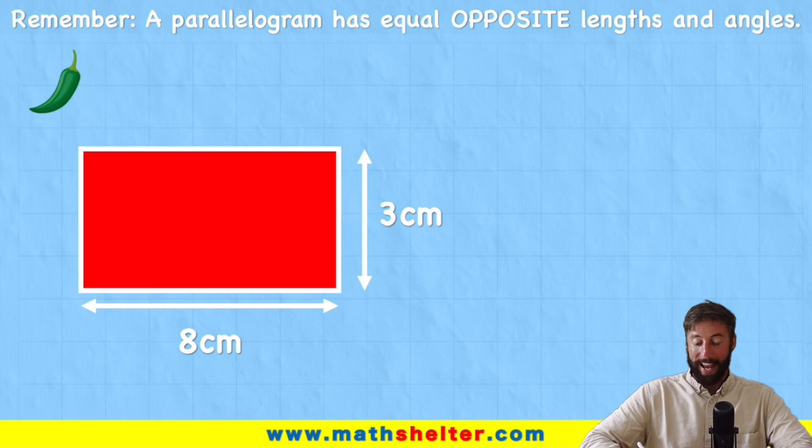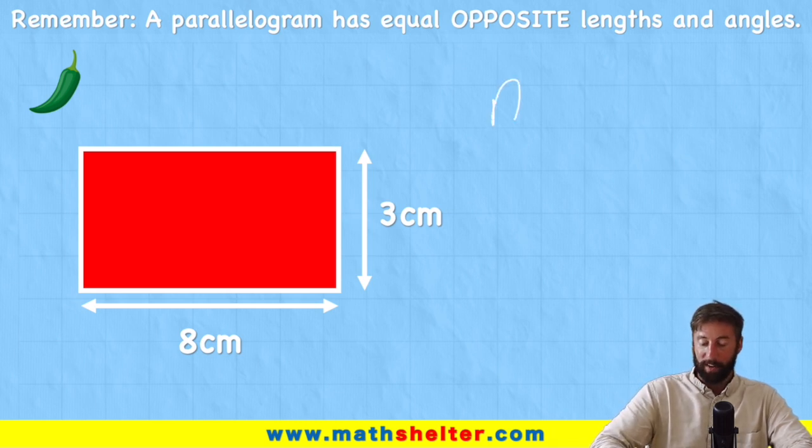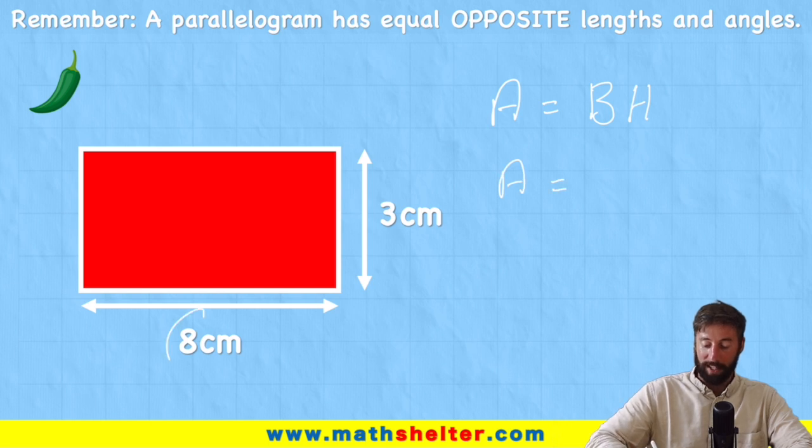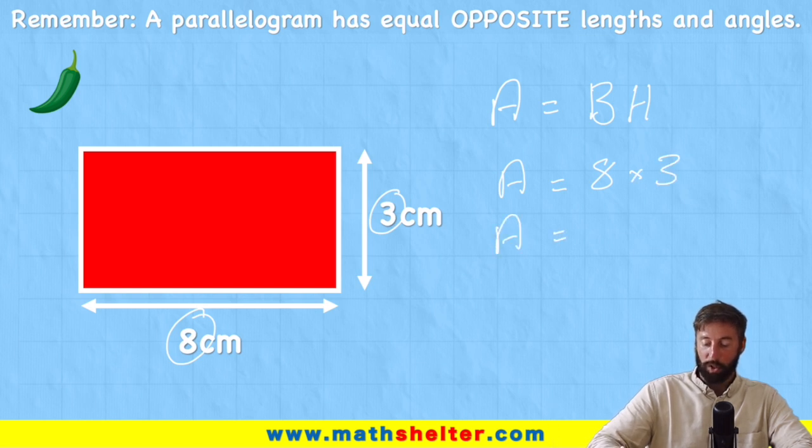And the rectangle has a base of 8 and a height of 3. And the formula we're going to use today to help solve this question is area equals base times height. So let's start to plug in some information. We have area equals the base which is 8 centimeters and the height which is 3 centimeters. So we have 8 times 3, area equals 24.